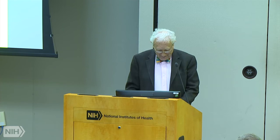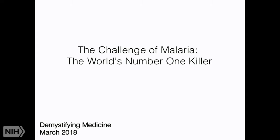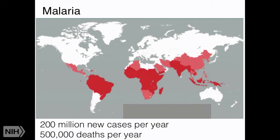Thank you for the nice introduction and the invitation. The title of today's talk is about malaria as one of the world's most important infectious diseases. Currently there are about 200 million new cases of malaria a year with 500,000 deaths per year. As you can see from this map, malaria occurs in the tropical and subtropical regions of the world. It's an infection caused by plasmodium parasites — one-celled protozoan parasites of the genus plasmodium — and these parasites cycle between their Anopheles mosquito host and their human host.